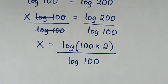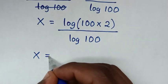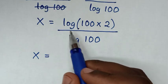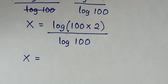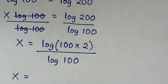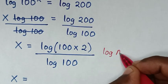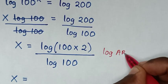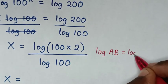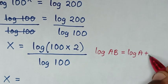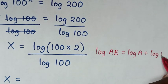Then in the next step, log of (100 times 2) is in the form of log of (a times b), which is equal to log of a plus log of b.